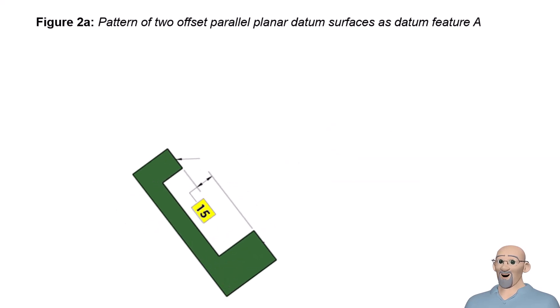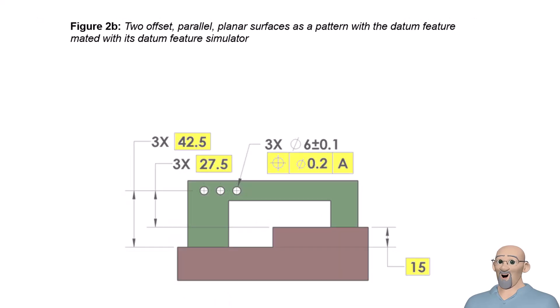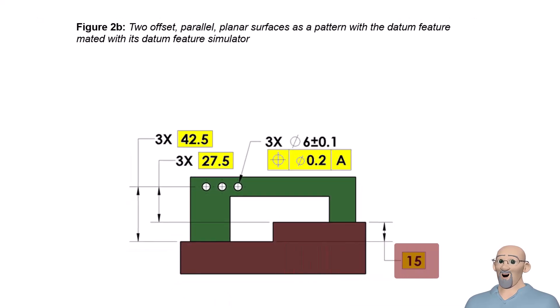Here we have a datum feature simulator with a 15 mm offset between the two planar surfaces. This will establish datum plane A. Note that we have two options for the location of simulated datum plane A. We are showing them here in red and blue.